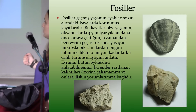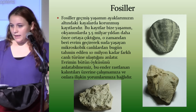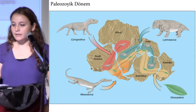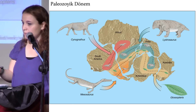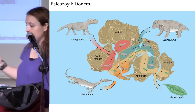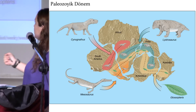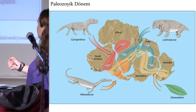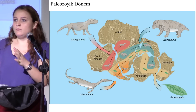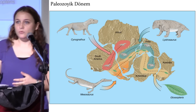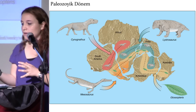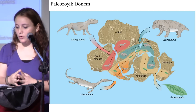Fosiller bize jeolojik açıdan kıtaların ayrılmasına yönelik de önemli katkılar sağlıyor. Örneğin Paleozoyik döneme ait Glossopteris bitkisi florasına ait fosiller Avustralya, Antarktika, Hindistan, Afrika ve Güney Amerika'da bulunmuş. Bu bitkinin koca okyanusları aşarak ya da uçarak öbür kıtalara ulaşması mümkün olmadığına göre, bu fosiller bize kıtaların eskiden bir bütün hâlinde olduğunu gösteren önemli örneklerden biridir.